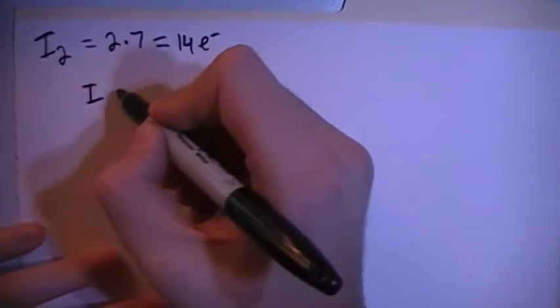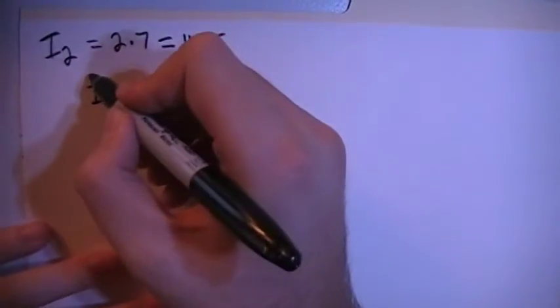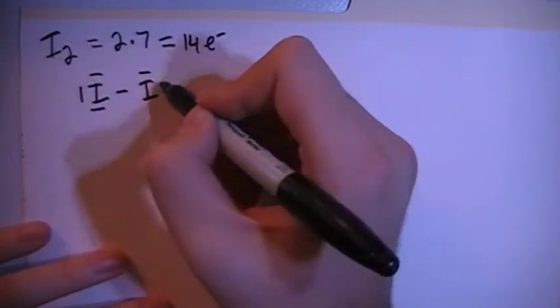So basically what we have, we have the two iodines here, and we can start off by single bonding them together and then filling in the octets on each of the atoms.